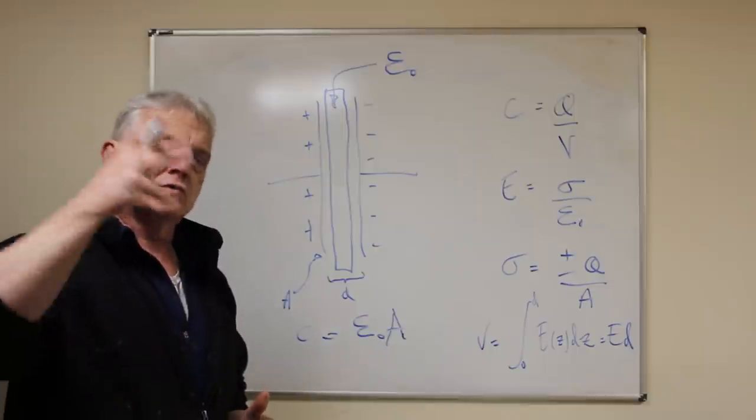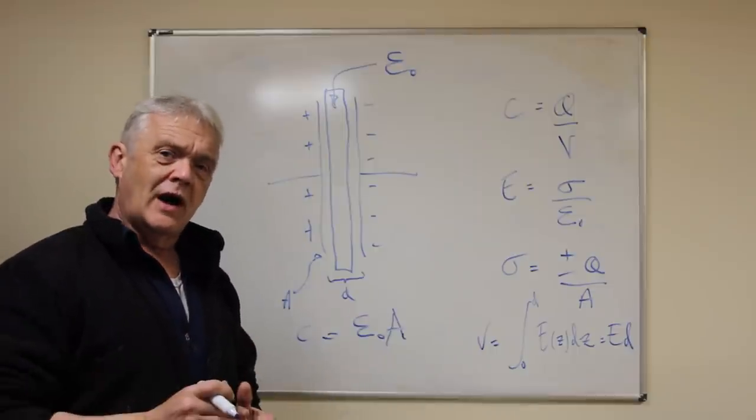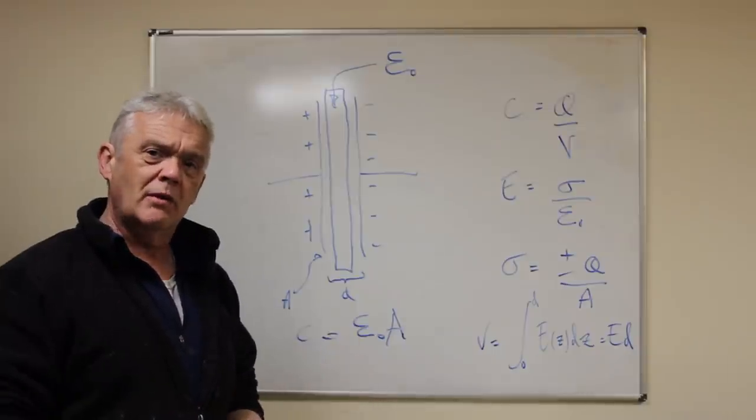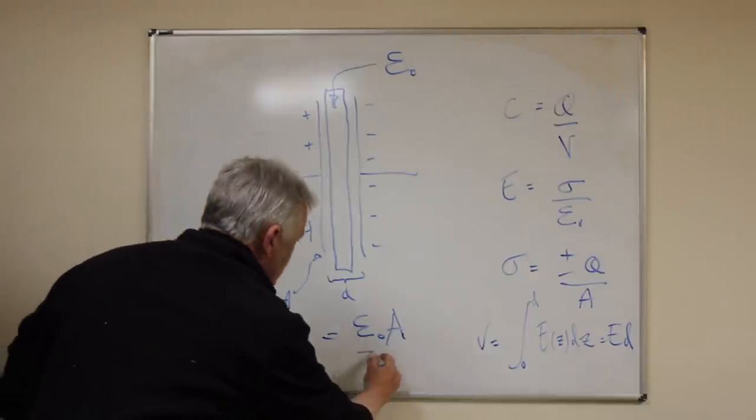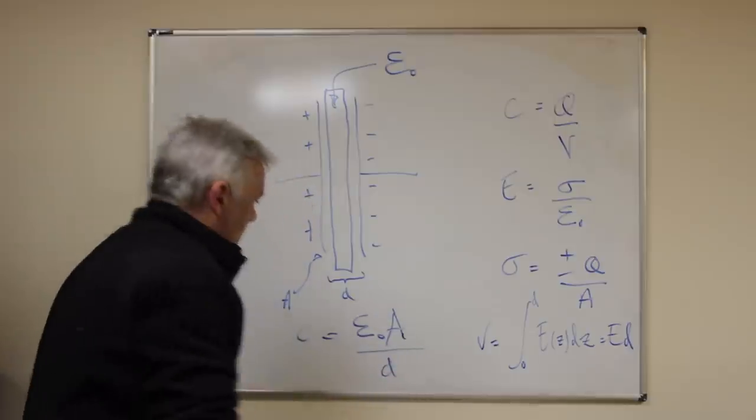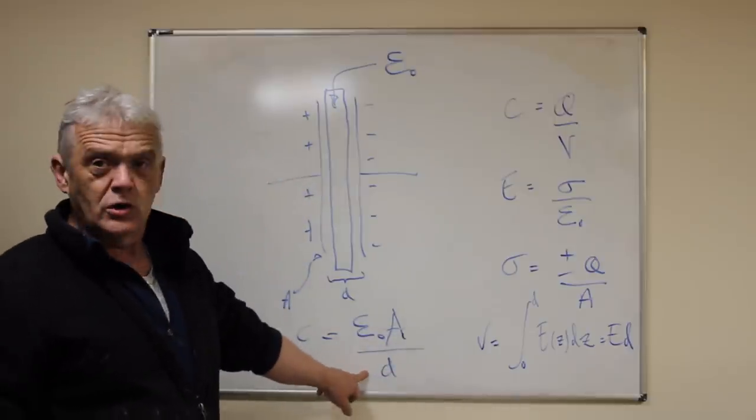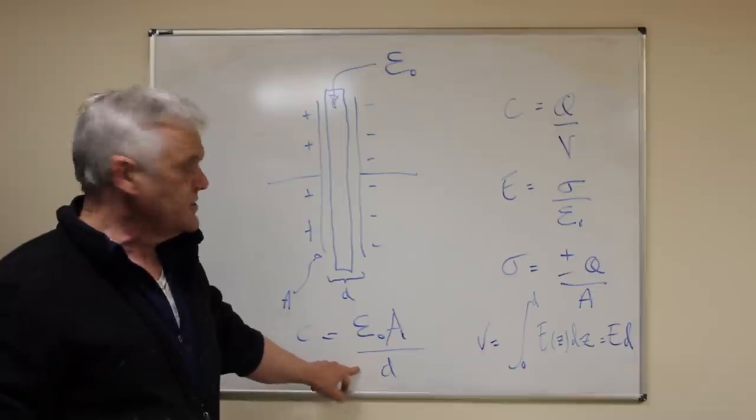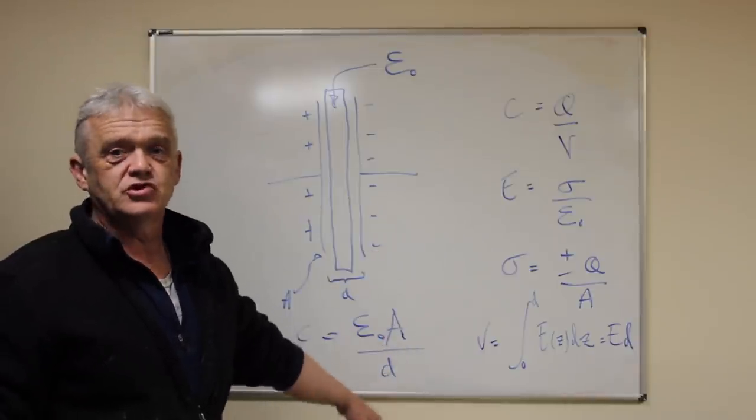That's an inverse relationship. The nearer they are, the higher the capacitance. The further apart they are, the lower the capacitance. So what we do is divide it. If we divide by a smaller number, the capacitance goes up. If we divide by a bigger number, the capacitance goes down.